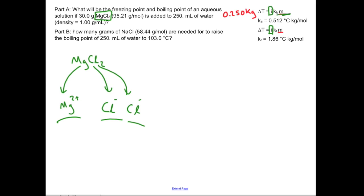So i is going to be equal to 3 for part A. For part B — how many grams of sodium chloride — I'm only going to get two pieces off of that: the sodium+ and the chloride−. So for that, i will be equal to 2.